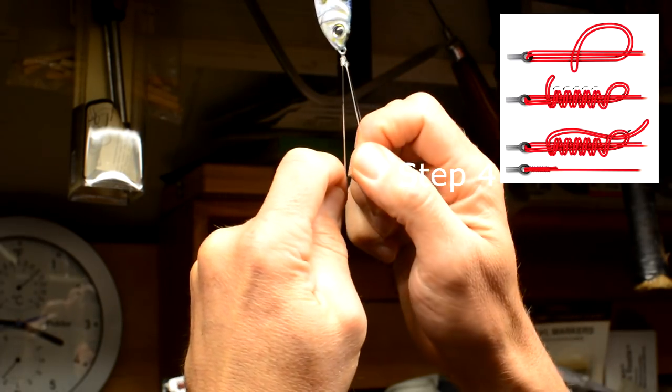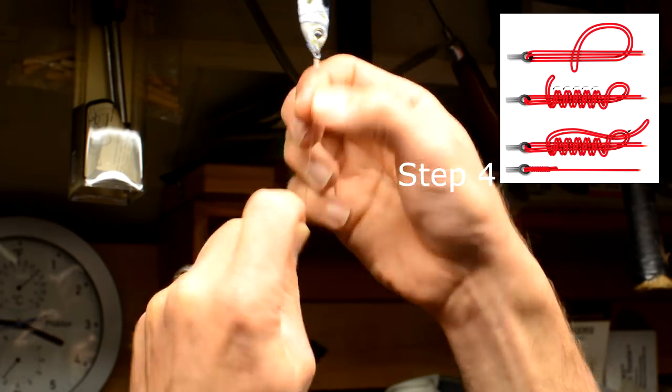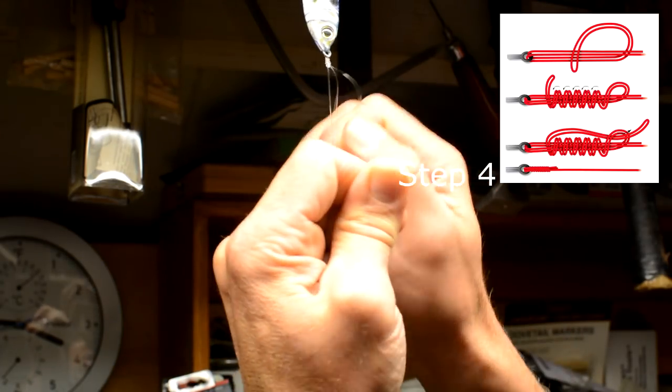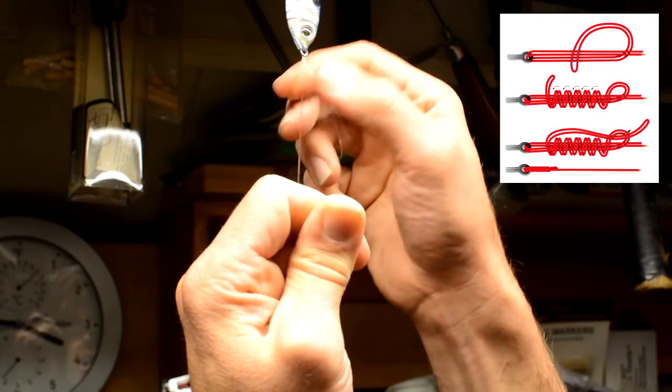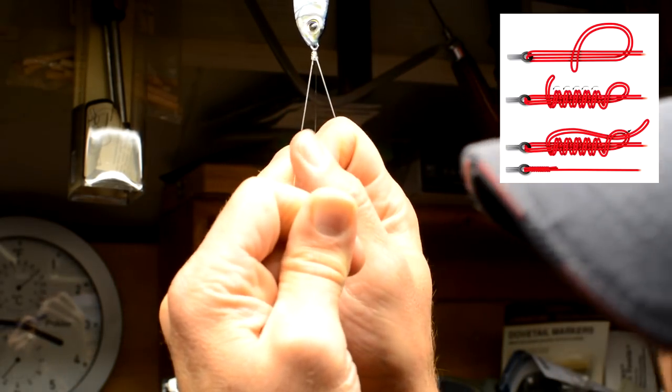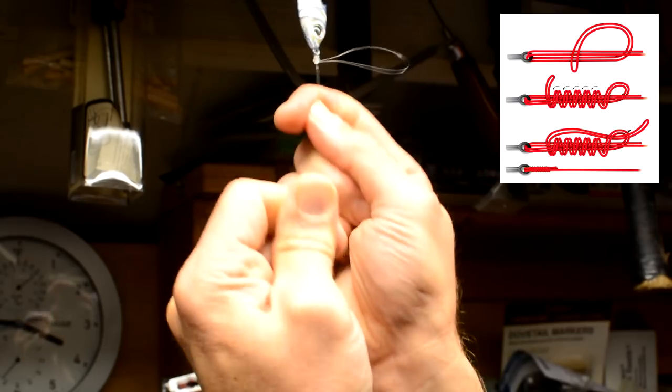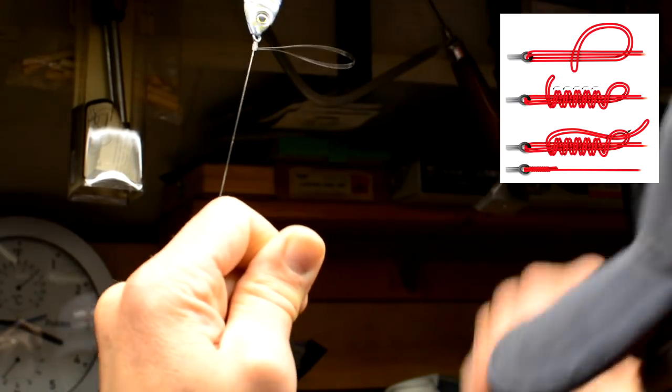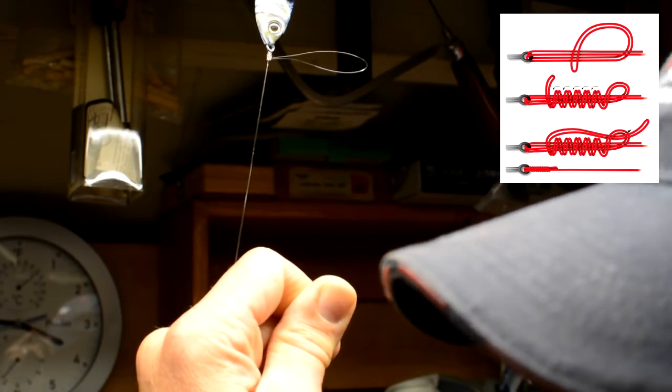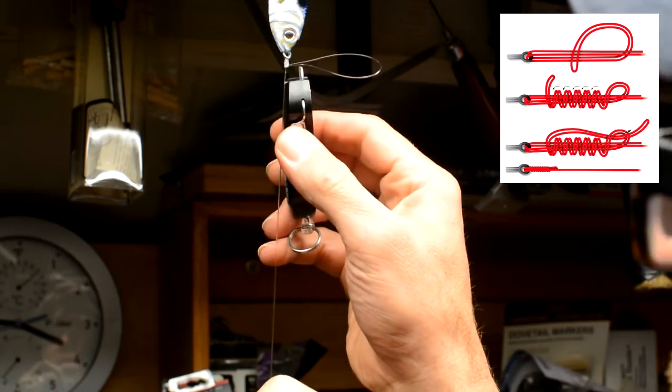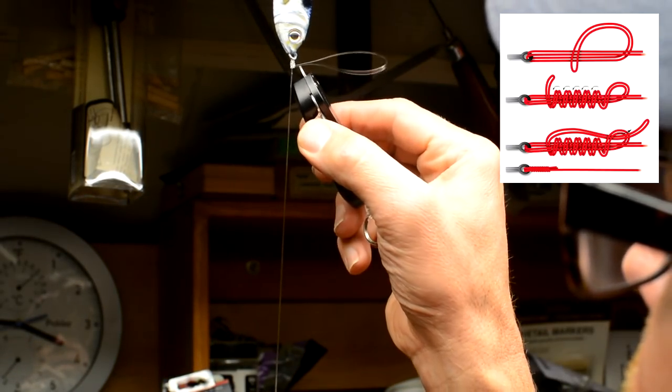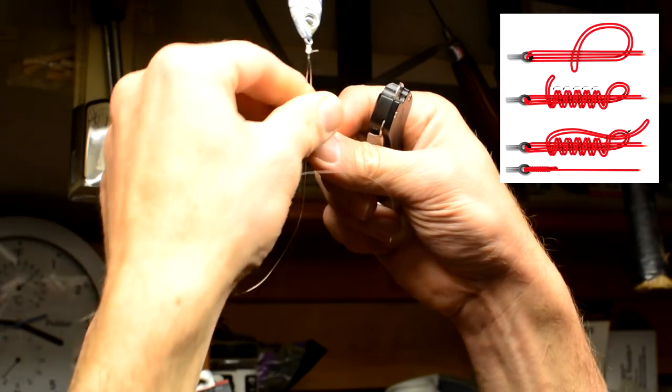Now, I've tested this knot over and over again in the field, in my shop with a scale. It never breaks. The line will break before the knot does. I can't say that about many other knots. A lot of guys like the Palomar knot, but there's a margin of error that if you don't get it right, it will break and that scares me. So, this is why I use this knot whenever I can.